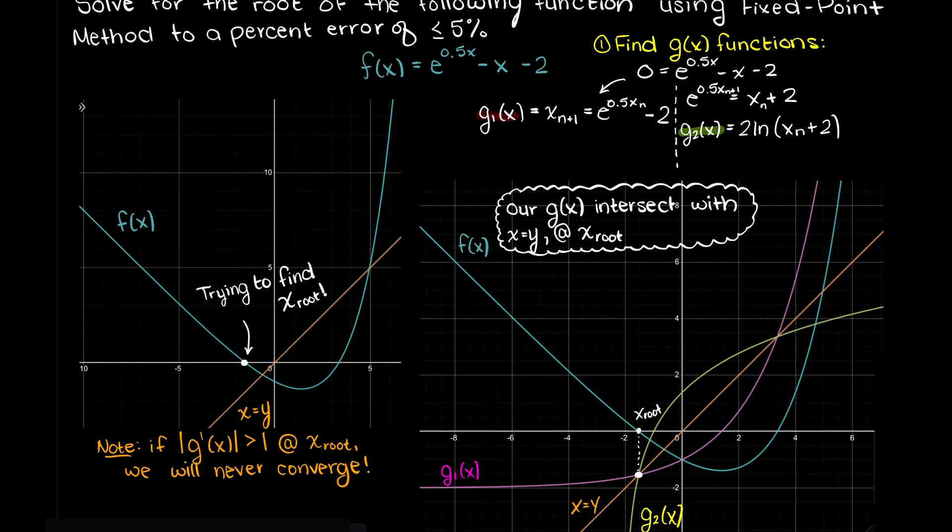Examining our graph, it is clear that g2's slope is rather intense around x root. Therefore, convergence with g2 is going to be impossible. We can validate this by trying a few starting guesses, and as you see we always diverge away from our solution. So, we are left to begin using g1 to solve for our function's root.